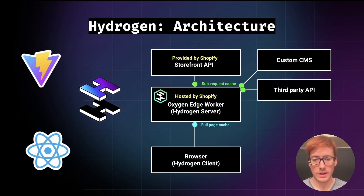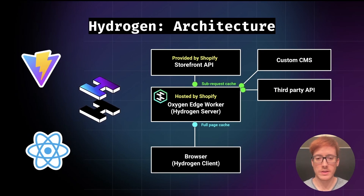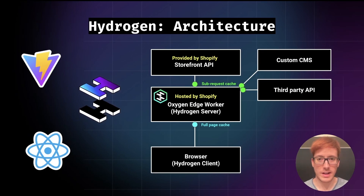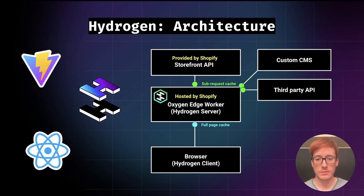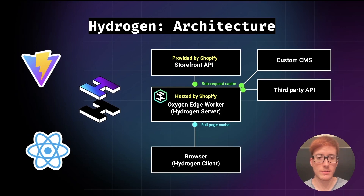In this diagram, we have an overview of the architecture of a Hydrogen app once it's deployed. We can deploy Hydrogen to any JavaScript runtime, such as Node.js, Cloudflare Workers, or Deno Deploy. Here we are using Oxygen as an example, which is a hosting platform provided by Shopify for Hydrogen apps. The Oxygen worker, located at the edge near the users, gets requests from the browser, processes the request running our Hydrogen app, and streams back a response so that the browser can start painting things on the screen quickly. In the worker, we can make sub-requests to the Storefront API to get information about our Shopify store, or sub-requests to any third-party API, such as a custom CMS.